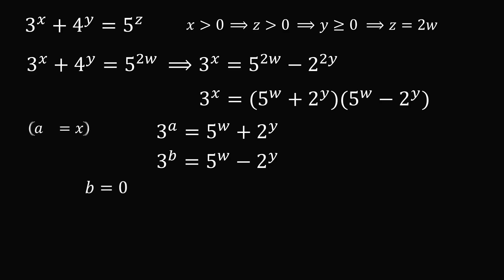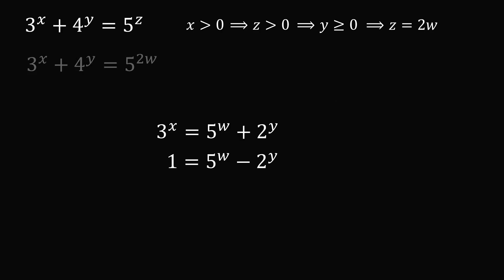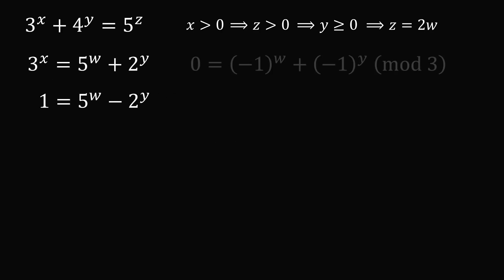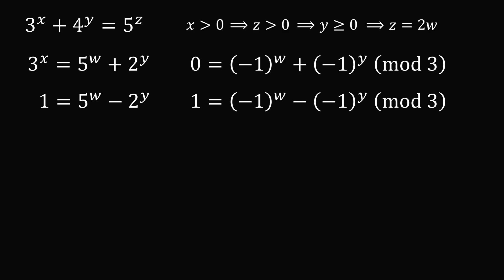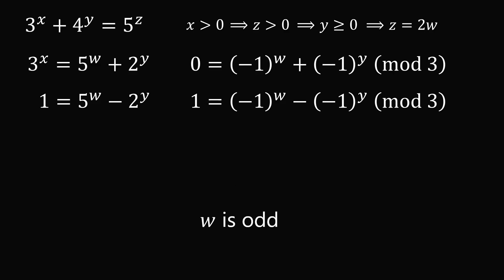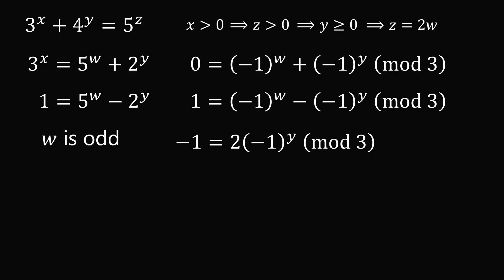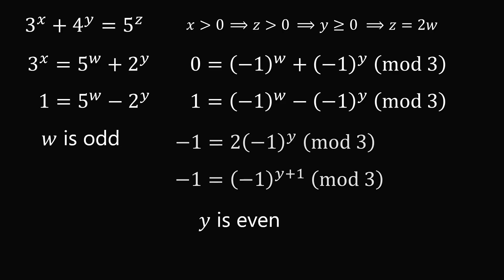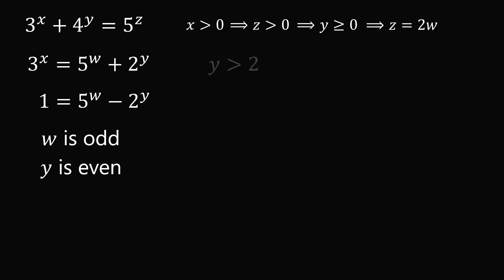We now have two equations and will focus on them. We'll consider each modulo 3, then add both equations to get the following result. This implies that w plus 1 has to be an even number, which means w is an odd number. Let's now subtract these two equations. From here, y plus 1 must be an odd number, which means y is an even number.